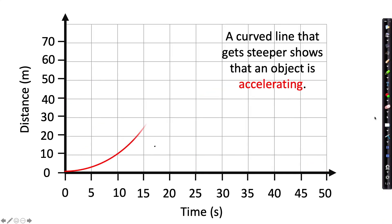A curved line that gets steeper shows that an object is accelerating. At the beginning of this graph the line is less steep so the object is moving slower, and then later on it is steeper so the object is moving faster. And we could show this if we were to draw some straight lines as close as possible to the graph.